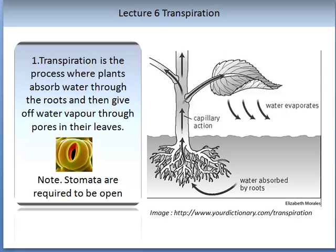The image on the slide shows a visual representation of transpiration. Transpiration can be defined as the process where the plant absorbs water through the roots and then gives off water vapour through the pores in their leaves. We have spent some time learning about how water is absorbed through the roots and how water moves through the xylem vessels into the leaves. We have also learnt about the structure of the stomata which appear on the surface of leaves. An important component of transpiration is that stomata have to be open in order for transpiration to occur.